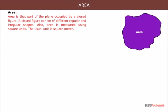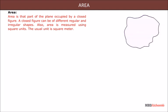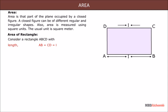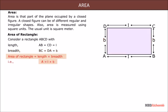Area is that part of the plane which is occupied by a closed figure. A closed figure can be of different regular and irregular shapes. Area is measured using square units; the usual unit is square meter. Area of Rectangle: Consider a rectangle ABCD with length L and breadth B. The area of a rectangle equals length times breadth. Also, L equals area divided by B, and B equals area divided by L.